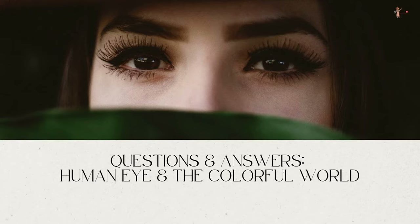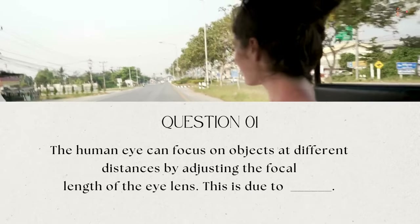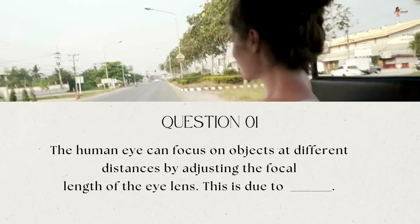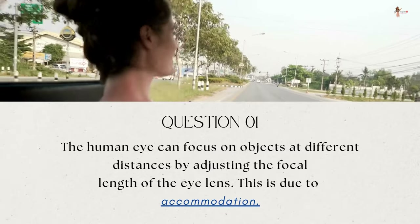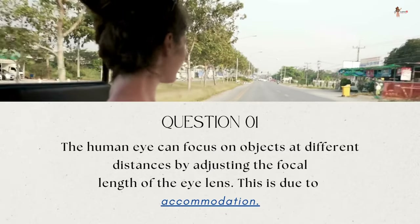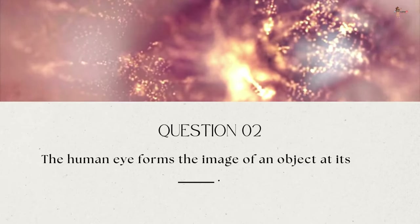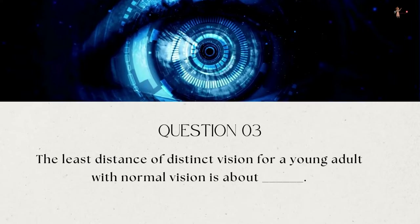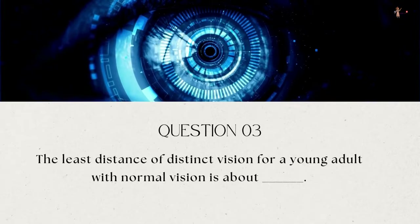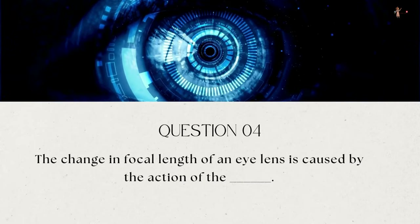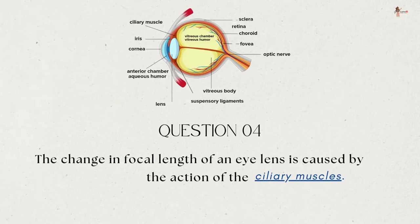Question 1: The human eye can focus on objects at different distances by adjusting the focal length of the lens — this is due to accommodation, the power of accommodation of our eye. Question 2: The human eye forms the image of an object at its retina. Question 3: The least distance of distinct vision for a young adult with normal vision is about 25 centimeters. Question 4: The change in focal length of the lens is caused by the action of the ciliary muscles.